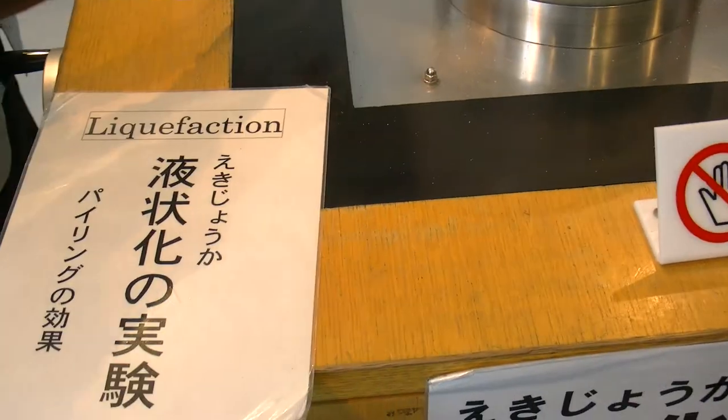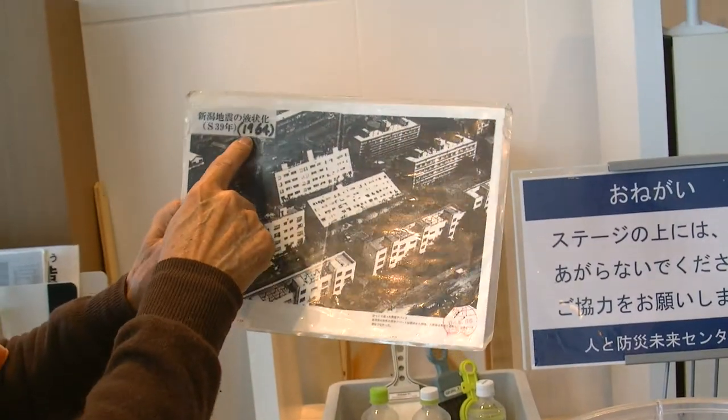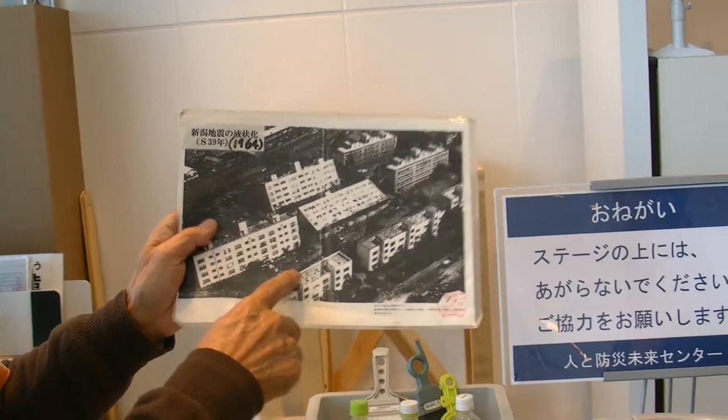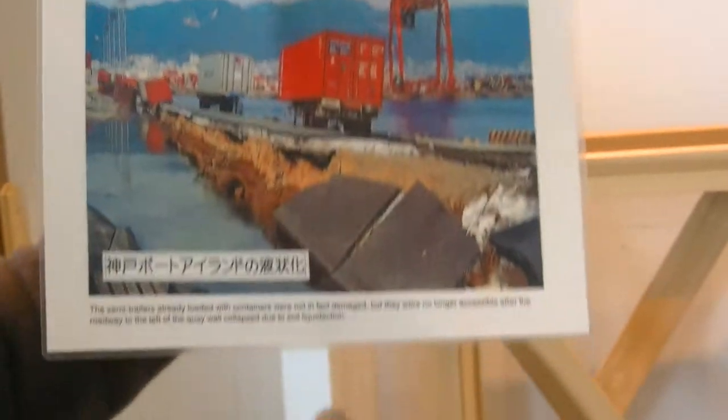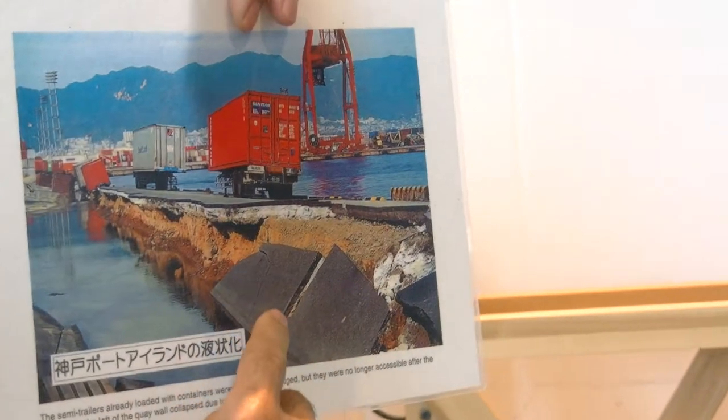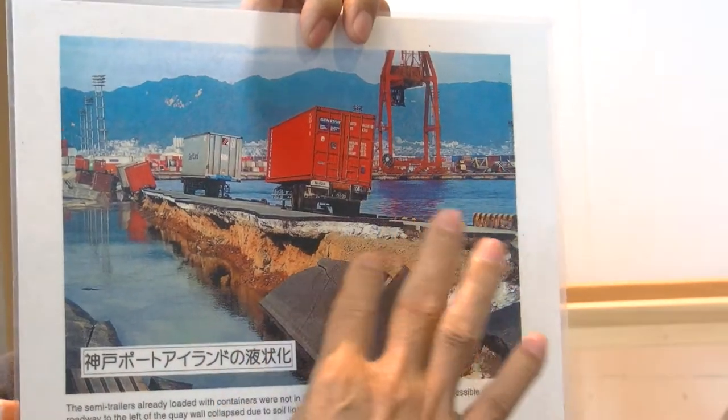It was the first time in Japan, 1964, in Niigata prefecture. Big housing fell down because of the liquefaction phenomenon. It was happening in the Kobe earthquake. Port facilities in Kobe were damaged like this.